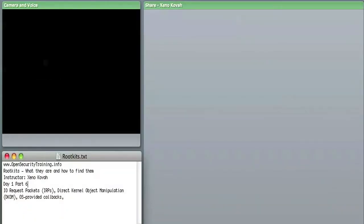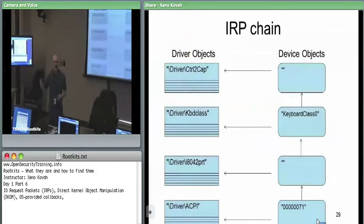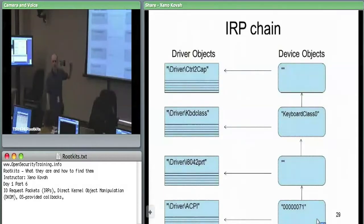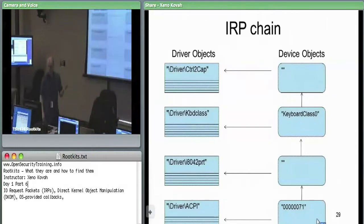One way something could do a rootkit-like interception or man-in-the-middling of the system — in order to either change data or capture data — is by registering as a filter driver. Basically, having a kernel module and getting inserted into the device object chain targeting some particular device object that data will be going towards. For example, they know keyboard class zero will eventually have keystroke data going up and down that chain, so they register themselves as an upper filter driver for that.